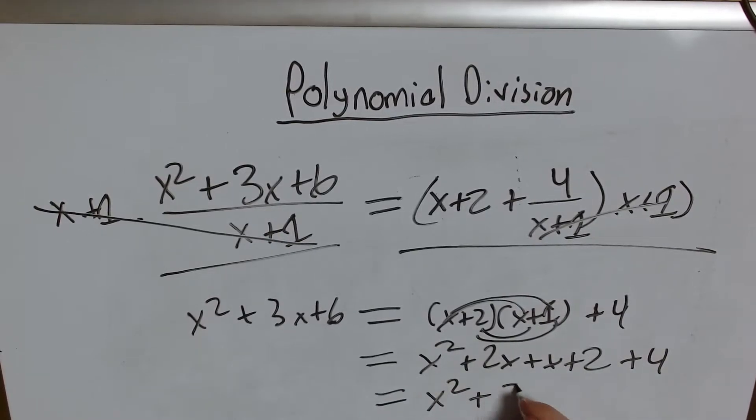Or x squared plus 3x plus 6 which is the same thing we have on this side. And that's why we have the 4 over x plus 1 because we have to because otherwise we're not dividing properly.